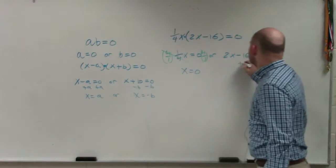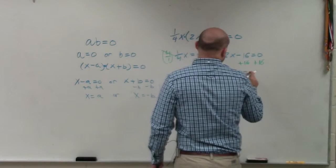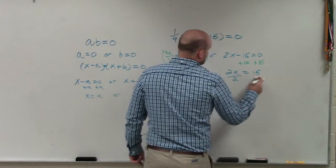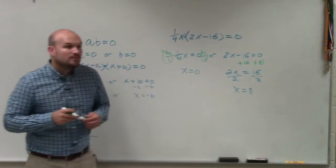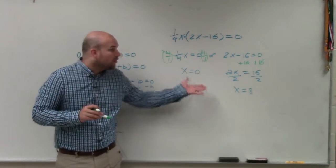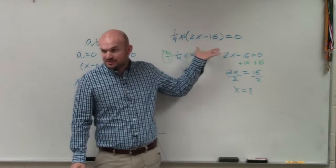And then over here, I'm going to add the 16 to both sides. Then I have 2x is equal to 16. Divide by 2, divide by 2, x equals 8. Therefore, when the values are 8 or when the values are 0, that makes this product equal to 0.